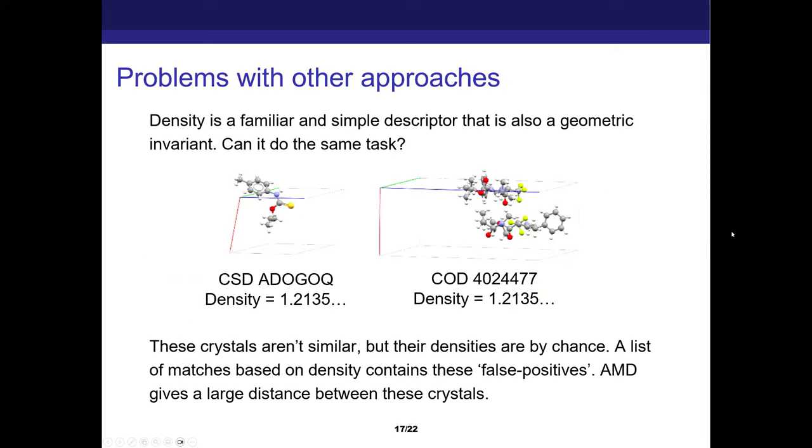What about other approaches? Could we do this with something else? Here's an example where density gives you a problem that doesn't exist with AMD. So these are completely different crystals. The unit cells, nothing alike. The molecules, nothing alike, not related at all. But their densities agree up to the fourth decimal place. And actually, the atomic mass of atoms is typically given to like four decimal places. So these densities pretty much agree all the way to the end. And this is something that didn't happen with AMD. AMD is able to distinguish these because they're geometrically very different.